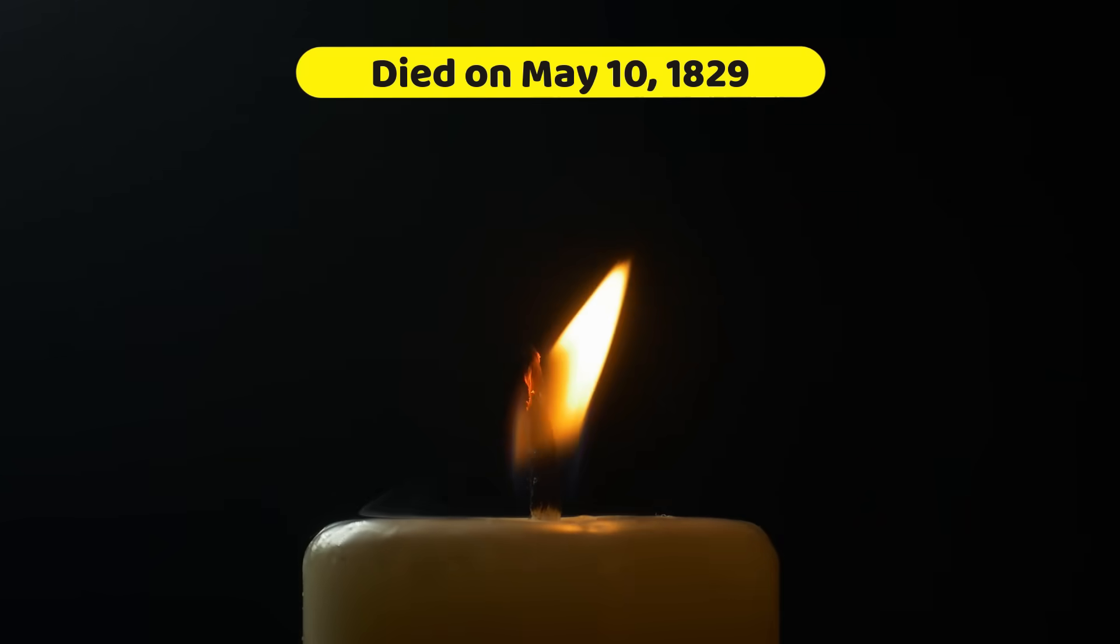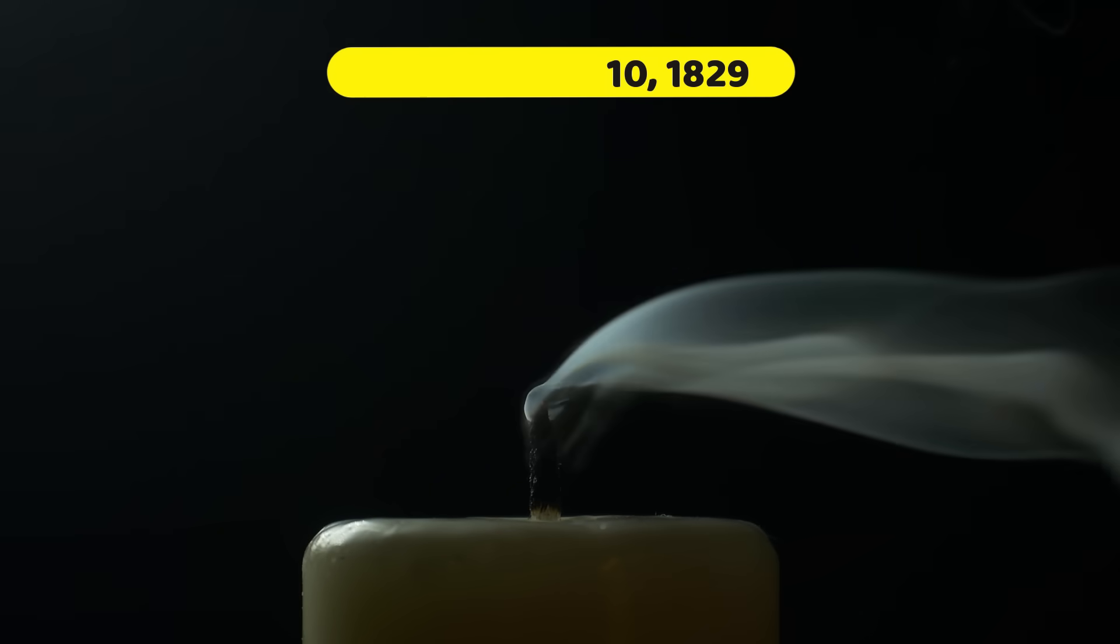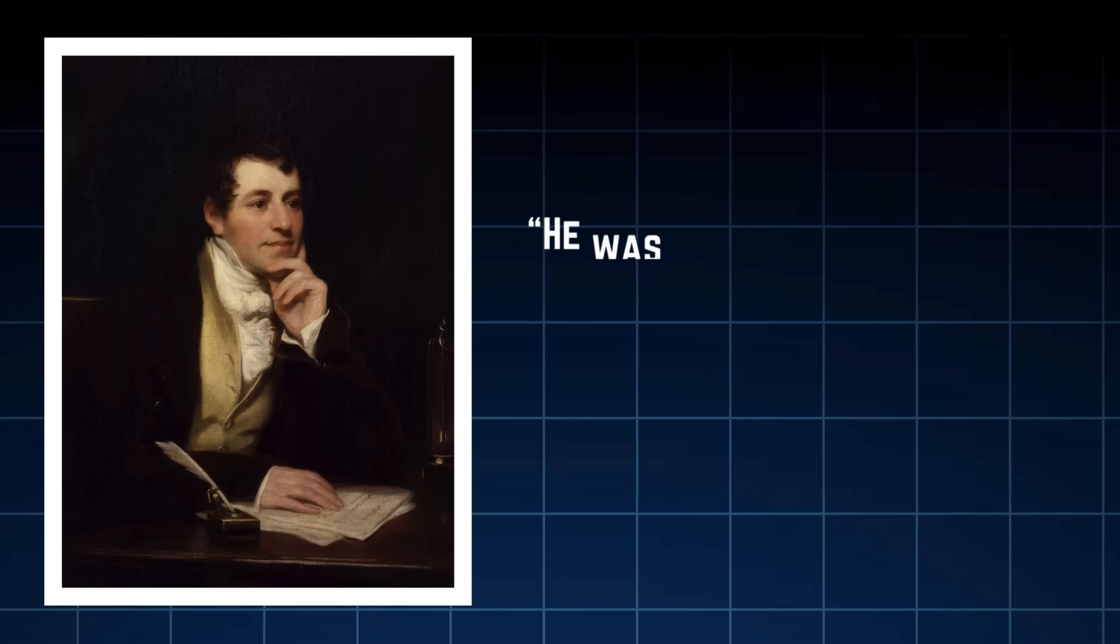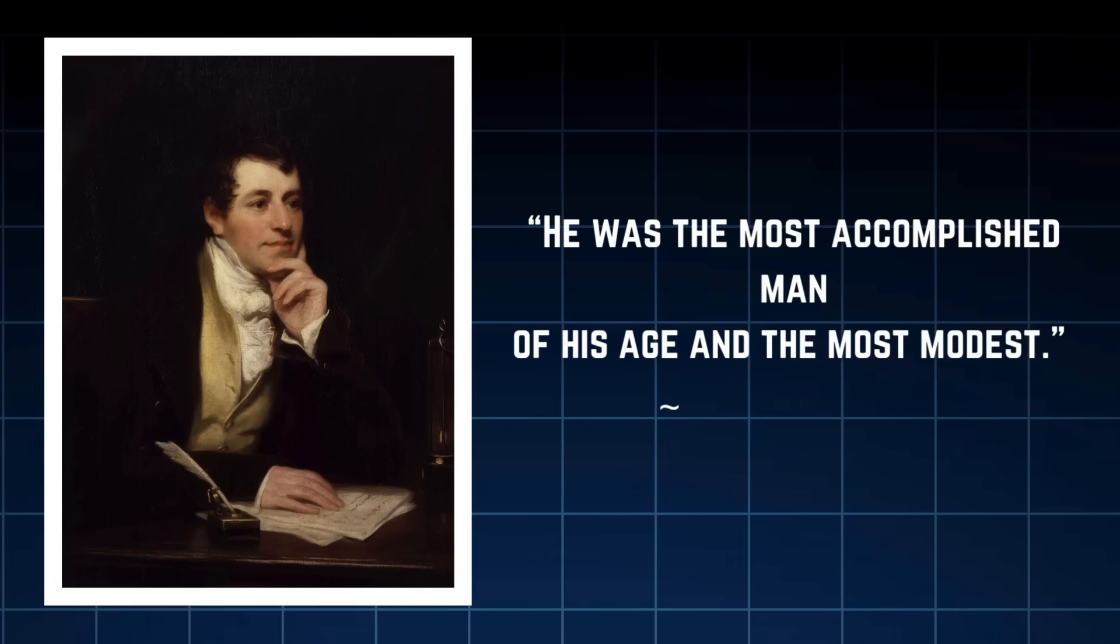On May 10, 1829, in his London home, Thomas Young's remarkable mind fell silent. He was 55. He was the most accomplished man of his age and the most modest.